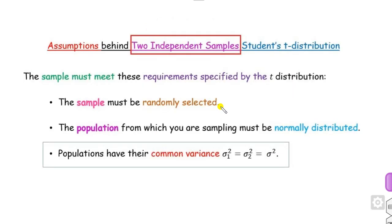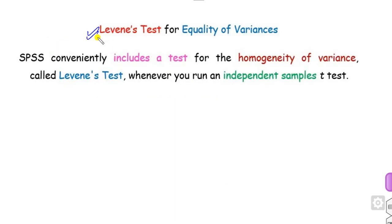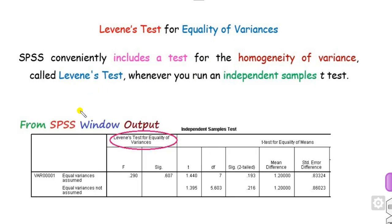As we know from theory, the major assumption behind the two-sample T-test is that of common variance. Our target in SPSS is to first check whether the condition of equal variances is satisfied. This is done using Levene's test for equality of variances, which is automatically included when you perform the independent sample T-test. In the SPSS output window, the first column is the Levene's test for equality of variance.